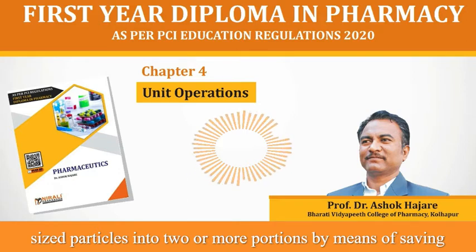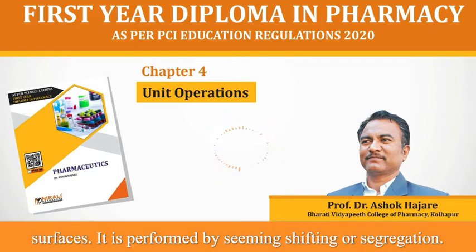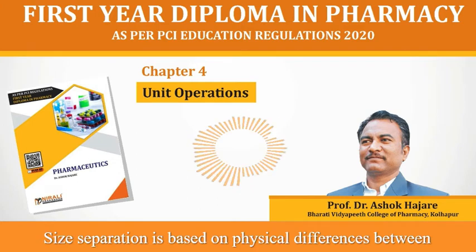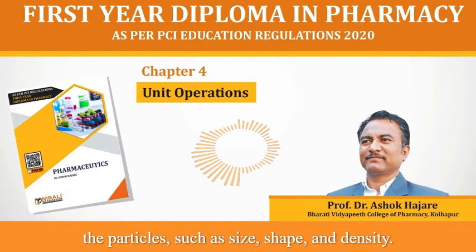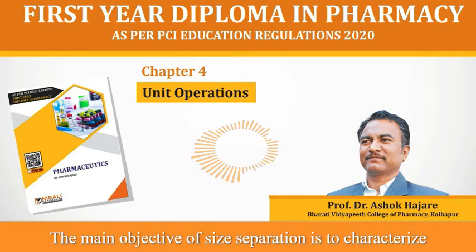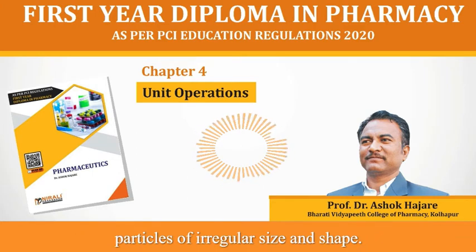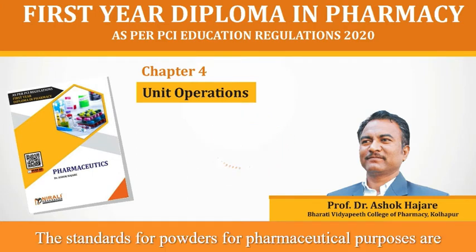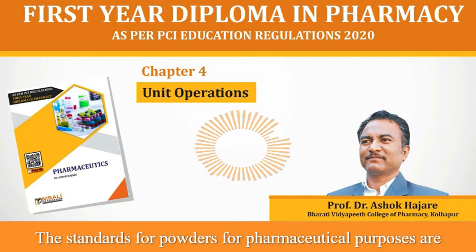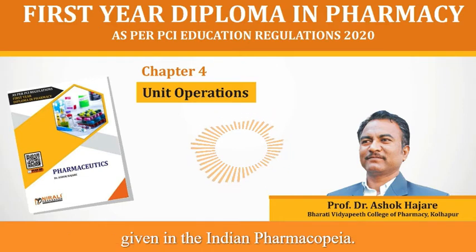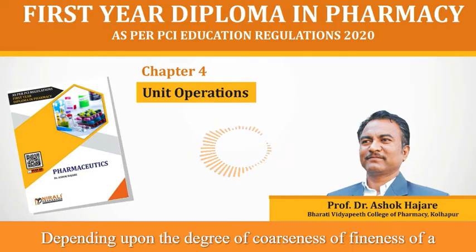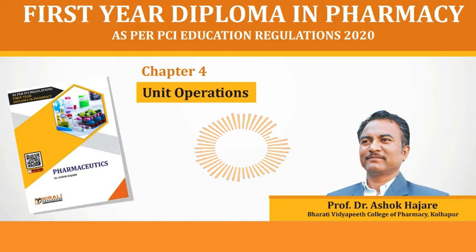Size separation involves the separation of a mixture of various size particles into two or more portions by means of sieving surfaces. It is performed by sieving, sifting or segregation. Size separation is based on physical differences between the particles such as size, shape and density. The main objective of size separation is to characterize particles of irregular size and shape.